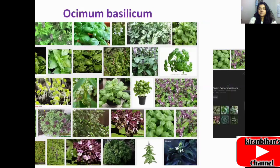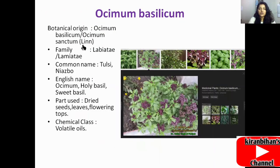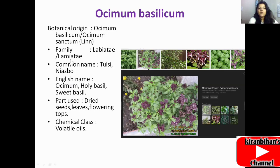Ocimum basilicum's botanical name is Ocimum basilicum or Ocimum sanctum. The scientist who discovered this plant was Linnaeus. Its family is the Lamiaceae. The common name is Tulsi or Nazbu. The English names are Ocimum, holy basil, and sweet basil. The parts used medicinally are the dried seeds, leaves, and flowering tops.